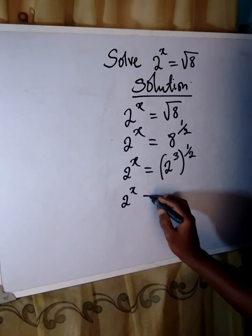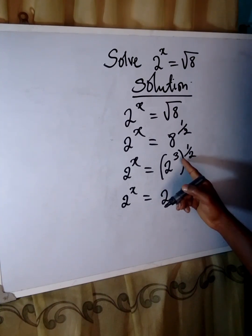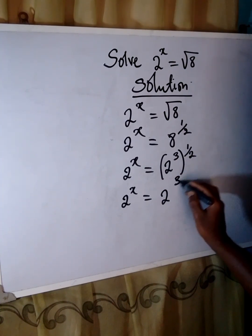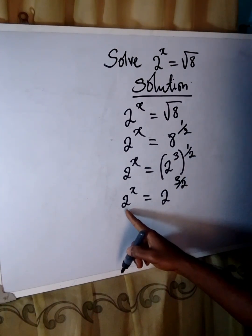2 to the power of x equals 2 to a power. Then the two powers, you must multiply them. So we are going to have 3 over 2. 3 times 1 is 3, then the 2 goes under.